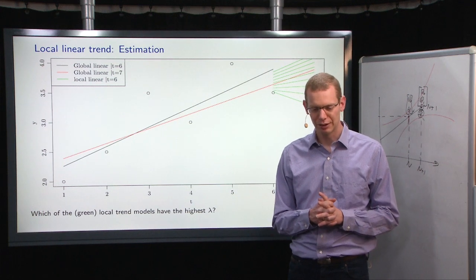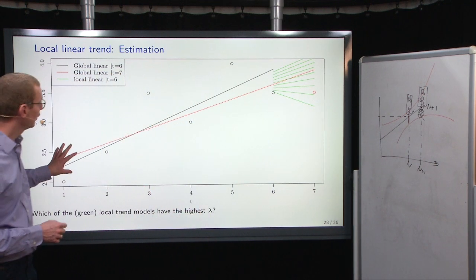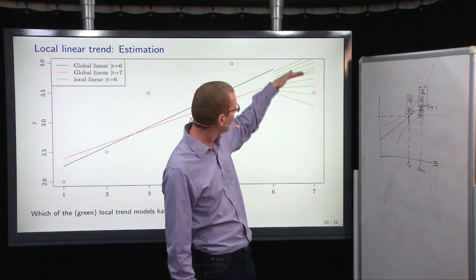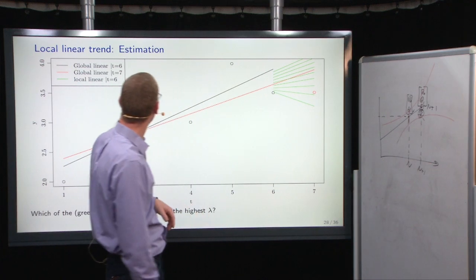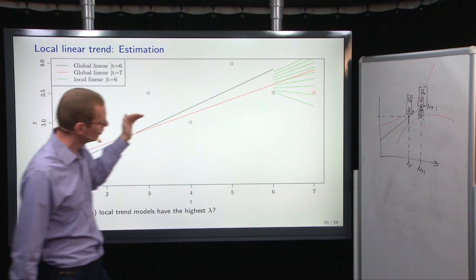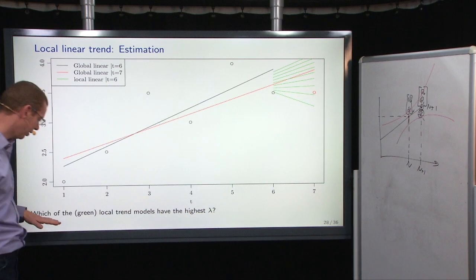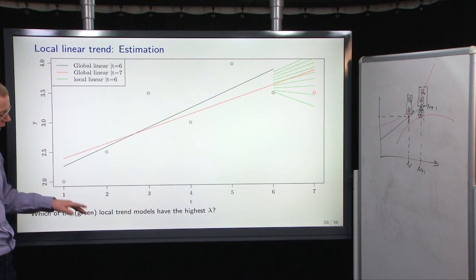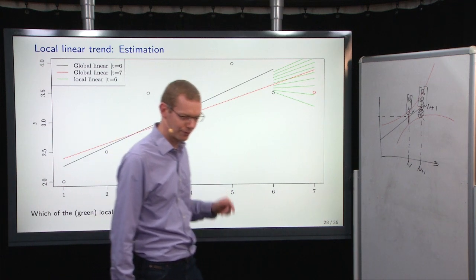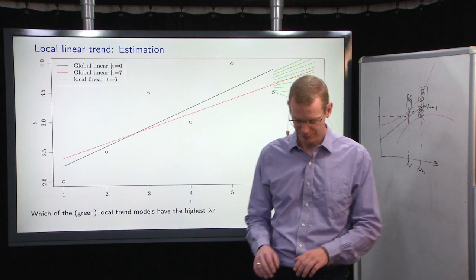But before giving that example, I just want to test. So this was a plot from before. Now, given an observation at time 7, I've made 10 different local models predicting with the update from using this observation here. And now the question is, which of these models, the green lines, have the highest lambda? Think of that, and then we'll get back to that later on, or as a comment. But do think of that.